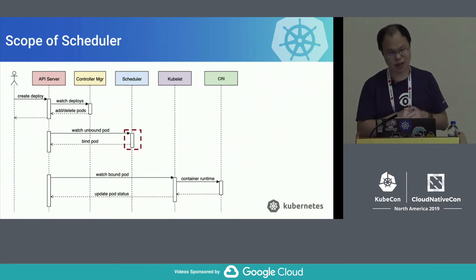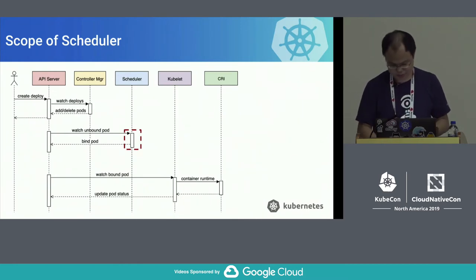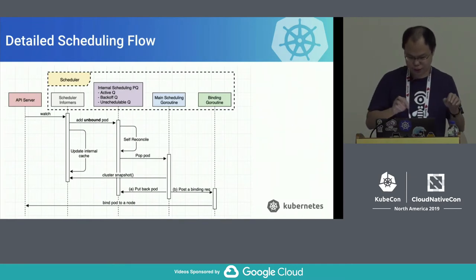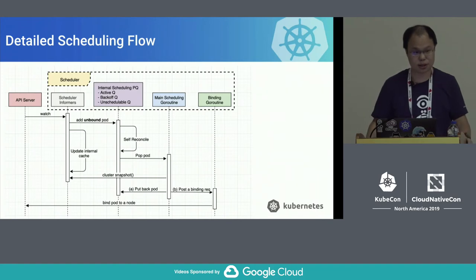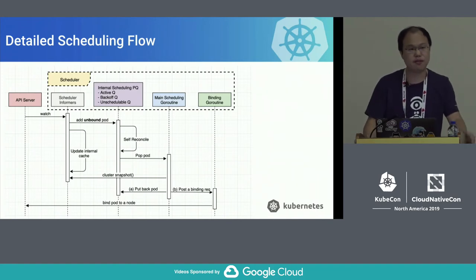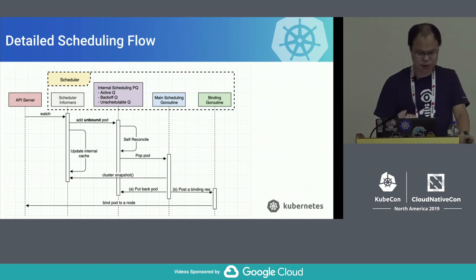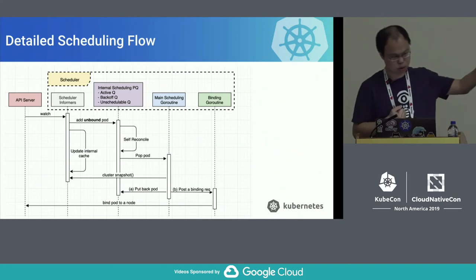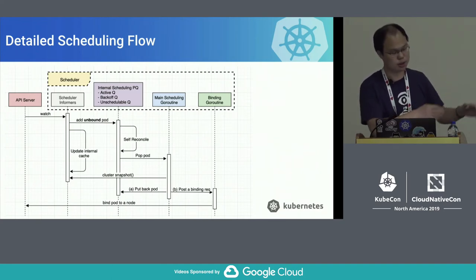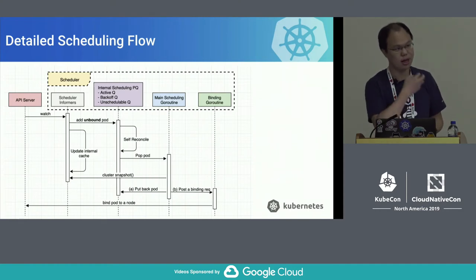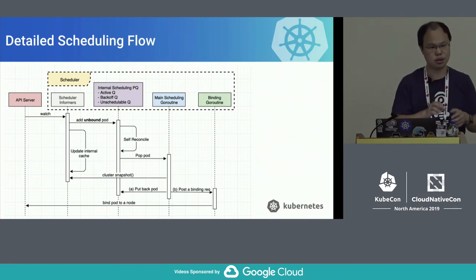That's basically the whole picture of what happens when a user creates a deployment. Since this is a scheduler introduction, we focus on that piece — let's look inside this black box. Internally, there are four big components inside the scheduler. The first one is the informer. If you are writing CRD controllers, you may be familiar with this. It watches all the API objects you are interested in, and once an API object is created or updated, you get a notification.